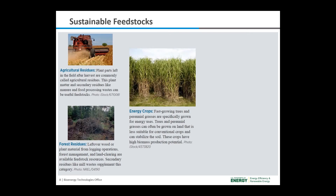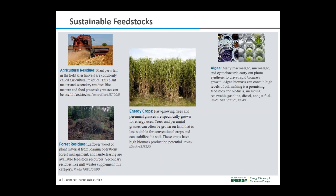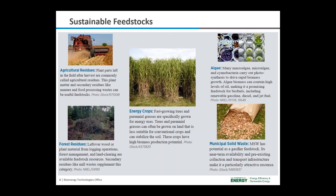Energy crops are fast-growing trees and perennial grasses specifically grown for energy uses. They can often be grown on land less suitable for conventional crops and can stabilize the soil. Many macroalgae, microalgae, and cyanobacteria carry out photosynthesis to drive rapid biomass growth. Algae biomass can contain high levels of oil, making it a promising feedstock for biofuels, including renewable gasoline. Municipal solid waste such as dead leaves, food scraps, and other garbage thrown out by consumers also has the potential to be a bioenergy feedstock.